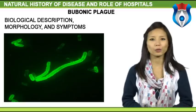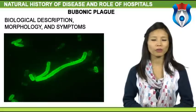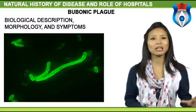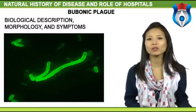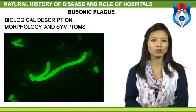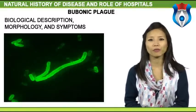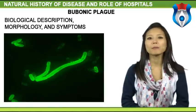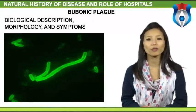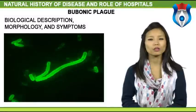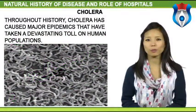Biological description, morphology and symptoms: at the time of the Black Death, little was known about biology. In fact, the concept of contagion originated as people saw this disease spreading to anyone near those infected. The people of the time became panicked and soon paranoid of anything related to the disease.